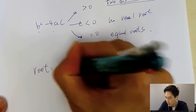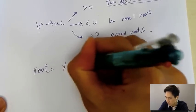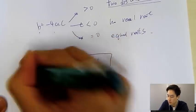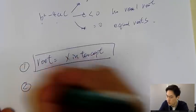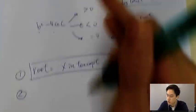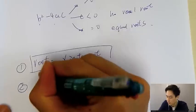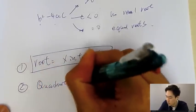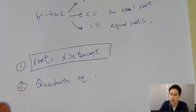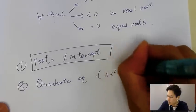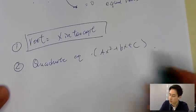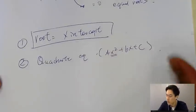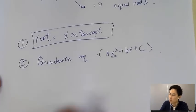Root means x-intercept — that is key point number one. Key point number two: the discriminant only applies to a quadratic equation, that is in the form ax squared plus bx plus c. It can only apply to x-squared equations.